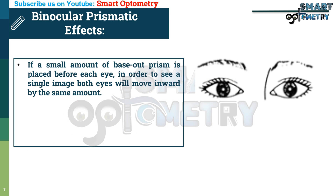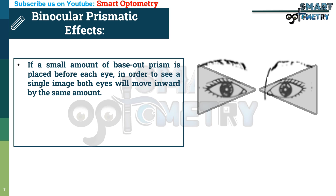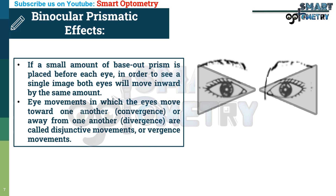If a small amount of base-out prism is placed before each eye, in order to see a single image both eyes will move inward by the same amount. Eye movements in which the eyes move toward one another or away from one another are called disjunctive movements or vergence movements.